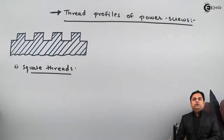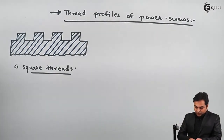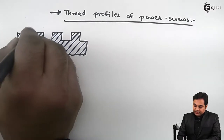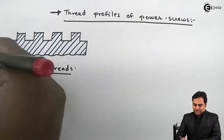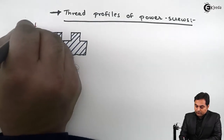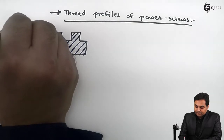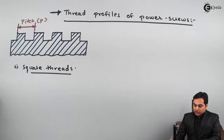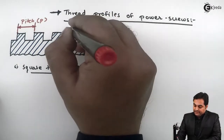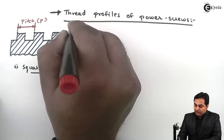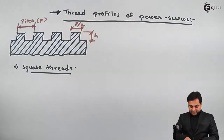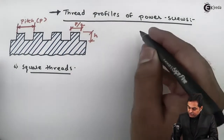Square threads are mostly used for power transmission. If I take any point on a thread and measure the distance to the same point on the next thread along the axis, that distance is called the pitch. The height of the thread is denoted by h, and the top surface of the thread is taken as pitch divided by 2.